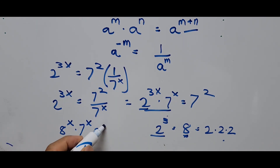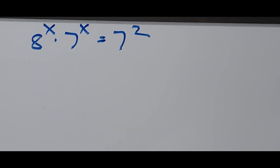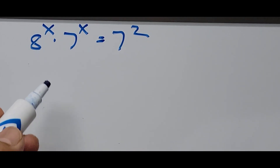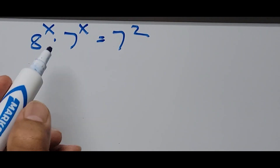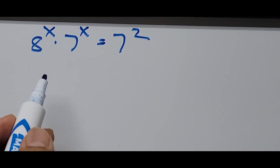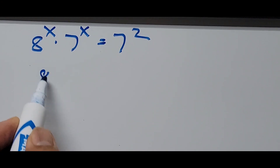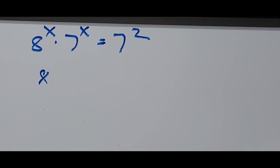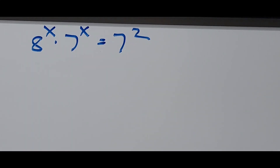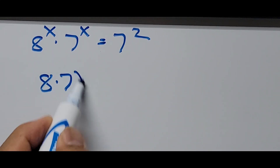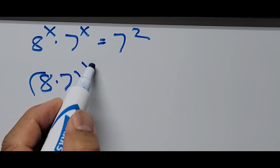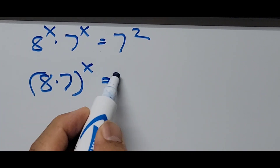Since we have terms with the same exponent x, this can be written as 8 multiplied by 7, quantity raised to x, equals 7 squared. That becomes 56 raised to x equals 7 squared.